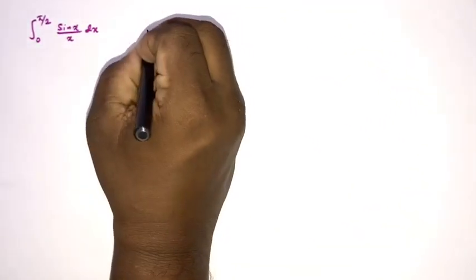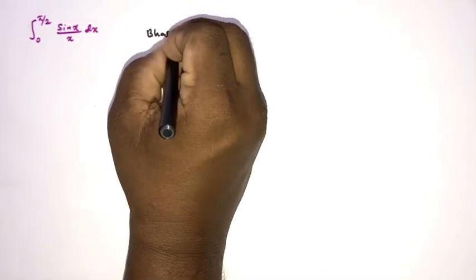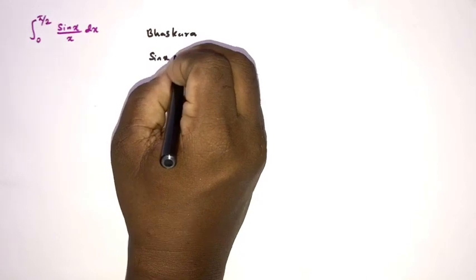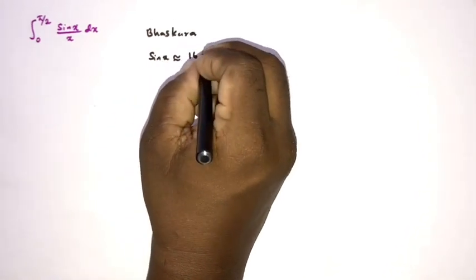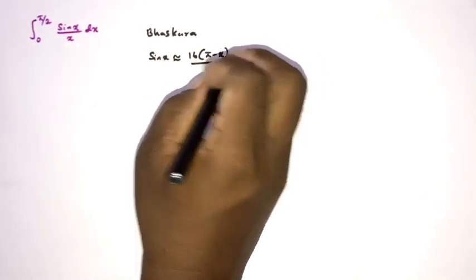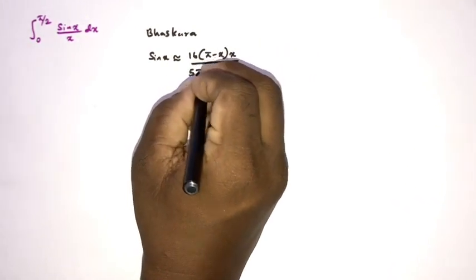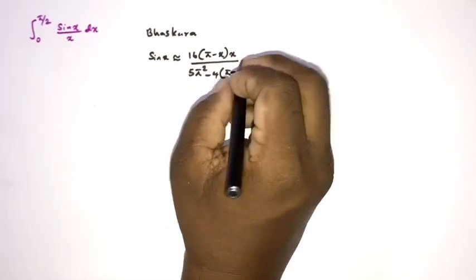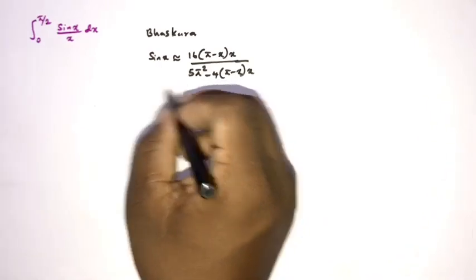First, here we have sin(x), so I am going to use the Bhaskara approximation of sin(x). This is the identity: sin(x) is approximately equal to 16 times (π minus x) times x, over 5 times π squared minus 4 times (π minus x) times x.